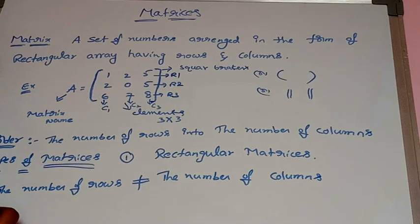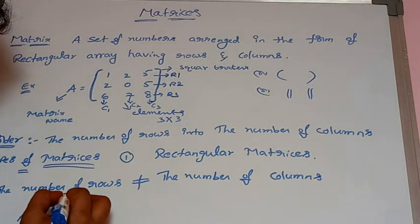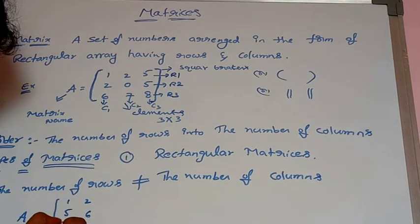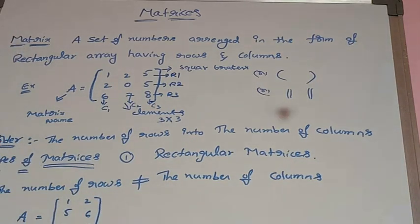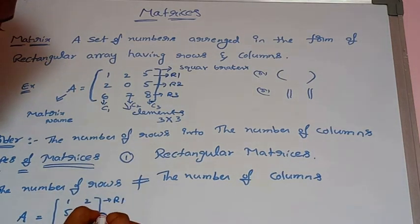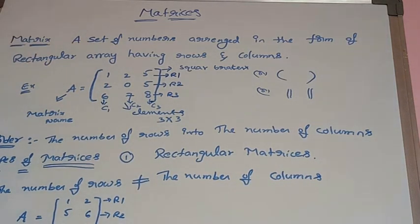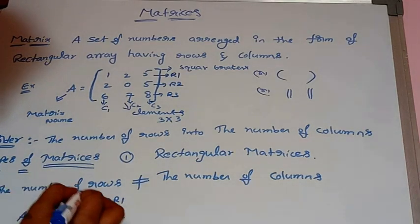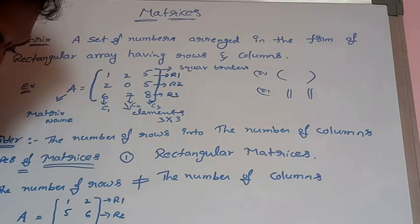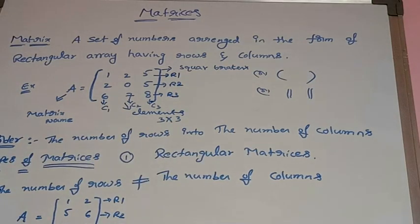For example, if A is a matrix with 3 rows — row 1, row 2, and row 3 — and 2 columns — column 1 and column 2 — then the order is 3 by 2. So A is a matrix of order 3 by 2.